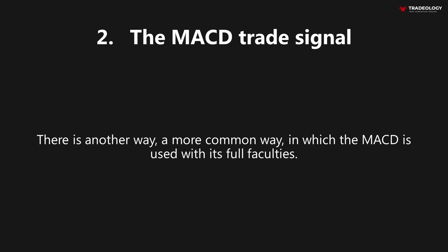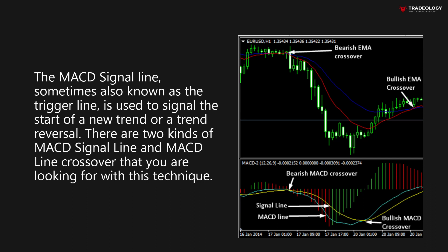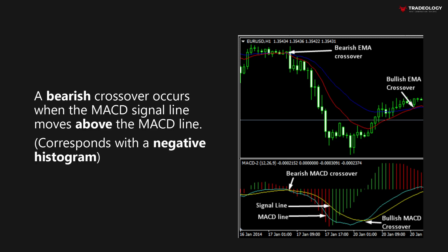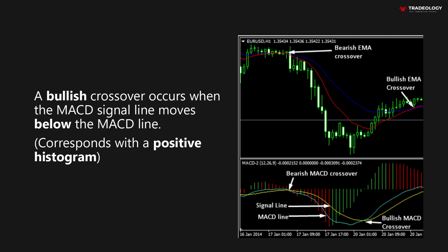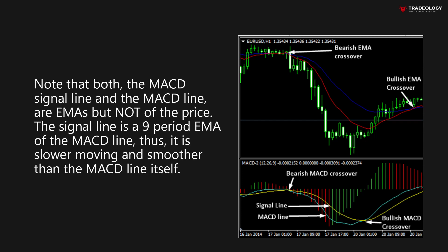Let's have a look at the MACD trade signal — a more common way in which the MACD is used with its full faculties. The MACD signal line, sometimes also known as the trigger line, is used to signal the start of a new trend or a trend reversal. A bearish crossover occurs when the MACD signal line moves above the MACD line, corresponding with a negative histogram. A bullish crossover occurs when the MACD signal line moves below the MACD line, corresponding with a positive histogram. Note that both the MACD signal line and the MACD line are EMAs, but not of the price — the signal line is a 9 period EMA of the MACD line, making it slower and smoother.